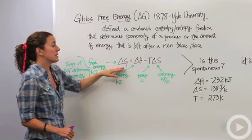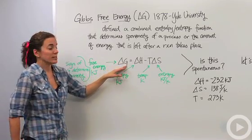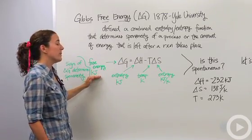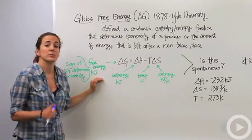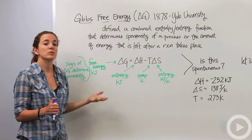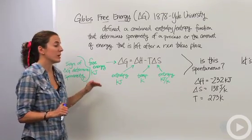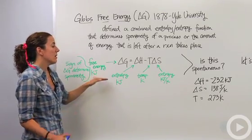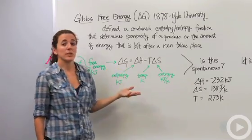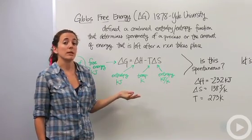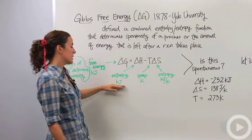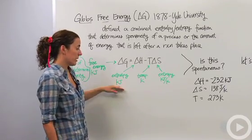Our delta G — our free energy — is measured in kilojoules or some unit of energy: kilojoules, joules, calories, whatever it may be. Enthalpy is the amount of energy either gained or needed for the reaction to occur, and it is also measured in kilojoules.